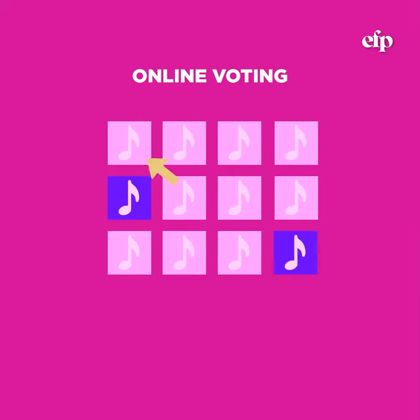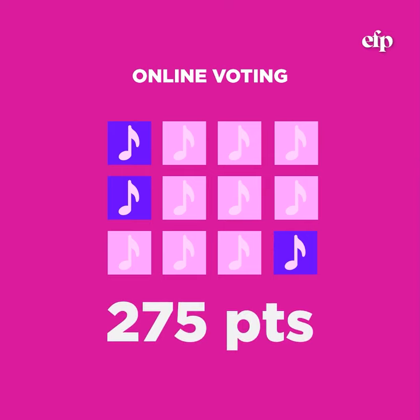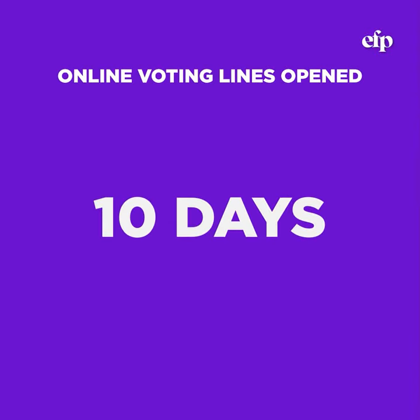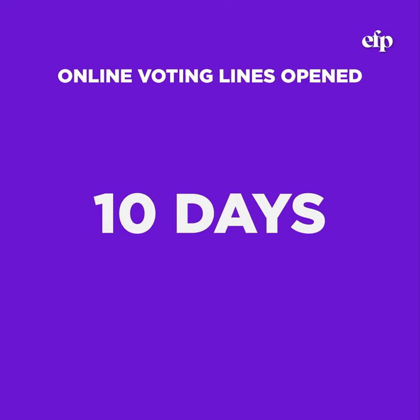The results will be shown out of a total of 275 points, which is the total of adding the numbers from 1 to 10 and multiplying by 5, according to the total members of the jury group. The online voting lines will be opened for 10 days after the grand final recap is released.